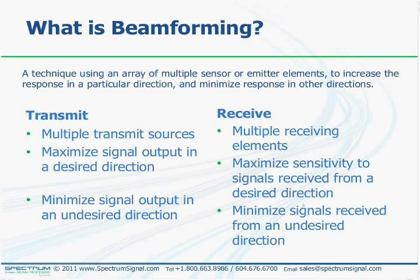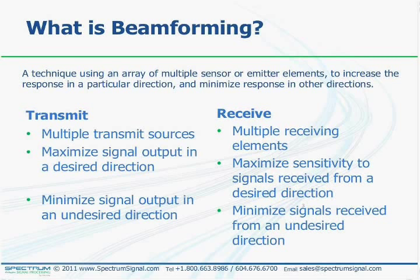I'd like to address some of the differences between transmitters and receivers in beamforming. In a transmitter, you have multiple transmit sources; in a receiver, you have multiple receiving elements. In a transmitter, you want to maximize the signal output towards the desired direction and minimize it to an undesired direction. In a receiver, you want to maximize sensitivity towards signals from a particular direction and minimize the strength of signals received from an undesired direction.